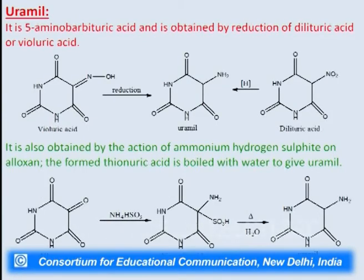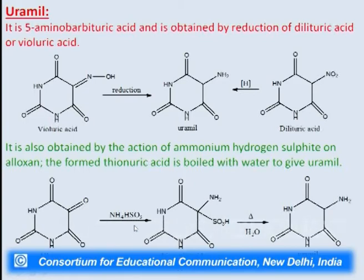The next derivative is uramil. Uramil is 5-aminobarbituric acid and is obtained by reduction of dilituric acid or violuric acid. It can also be obtained by the action of ammonium hydrogen sulfite on alloxan. From alloxan, we first get thiouric acid, which is uramil; on heating in the presence of water it gives uramil. Then comes dialuric acid — it is 5-hydroxybarbituric acid and is obtained by the action of nitrous acid on uramil, or by reduction of alloxan. Uramil reacts with nitrous acid to give the hydroxy derivative, which undergoes rearrangement and a hydrogen shift to give dialuric acid.